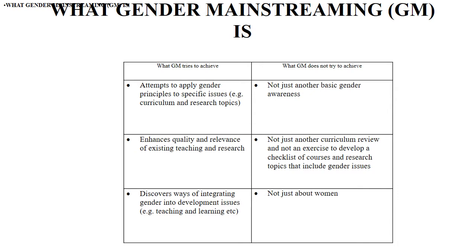We have a gender mainstreaming office at the University of Ibadan. From the table, gender mainstreaming tries to achieve: applying gender principles to specific issues such as curriculum and research topics, enhancing quality and relevance of existing teaching and research, and discovering ways of integrating gender into development issues such as teaching and learning. What gender mainstreaming does not try to achieve includes: not just another basic gender awareness, not just another curriculum review, and not an exercise to develop a checklist of courses and research topics that include gender issues.